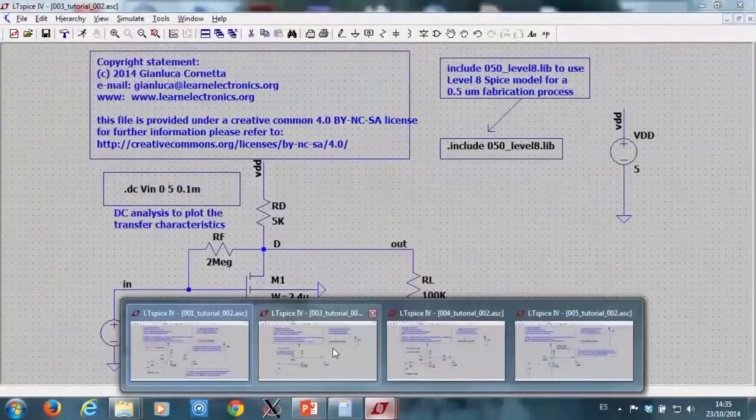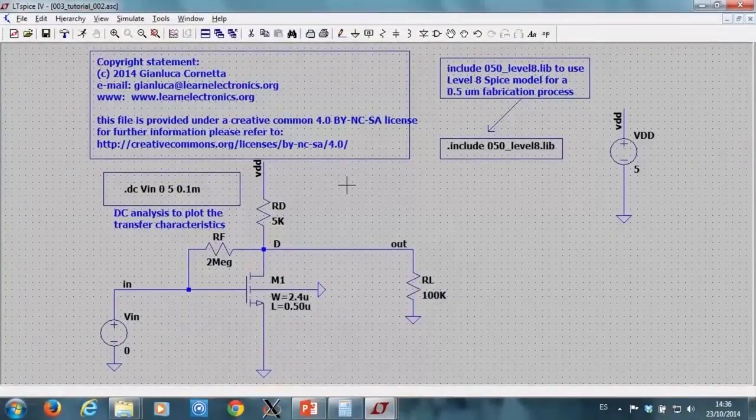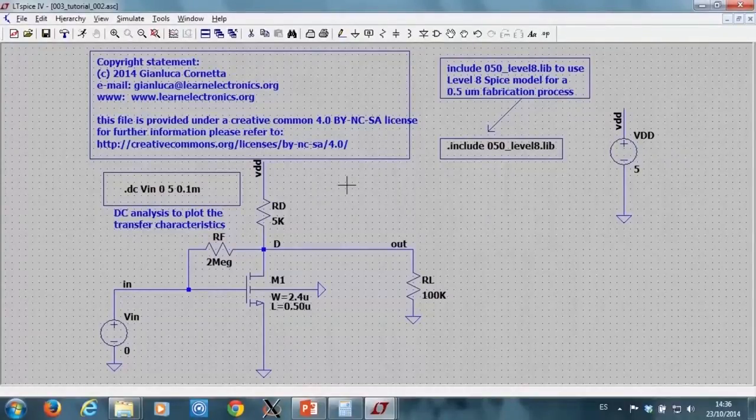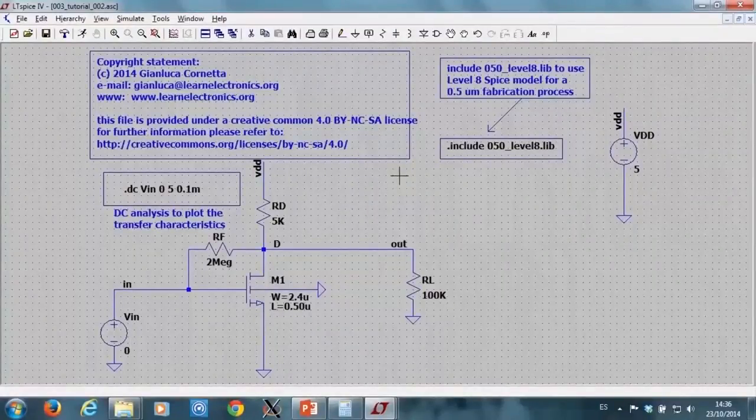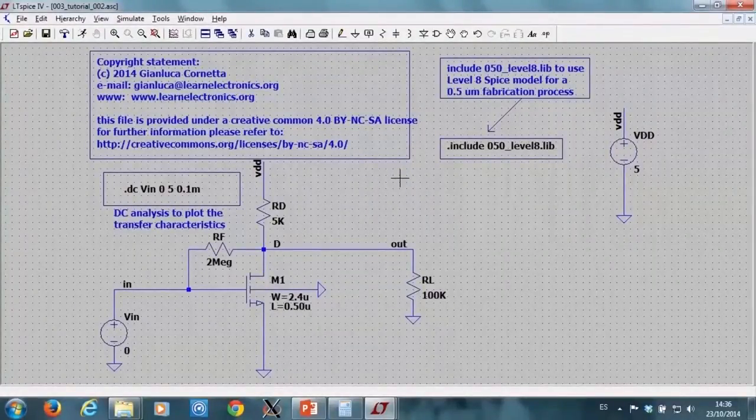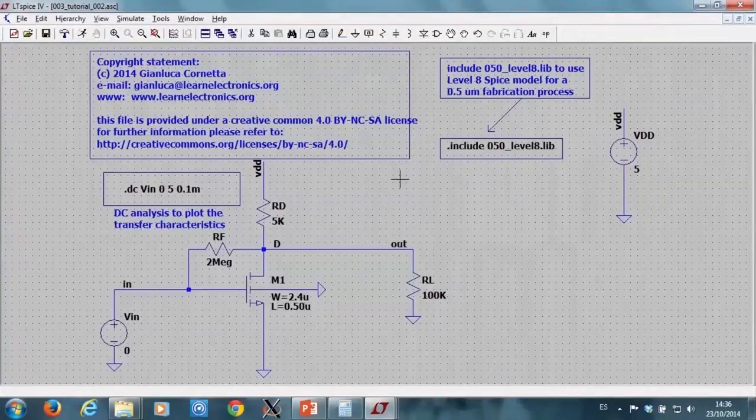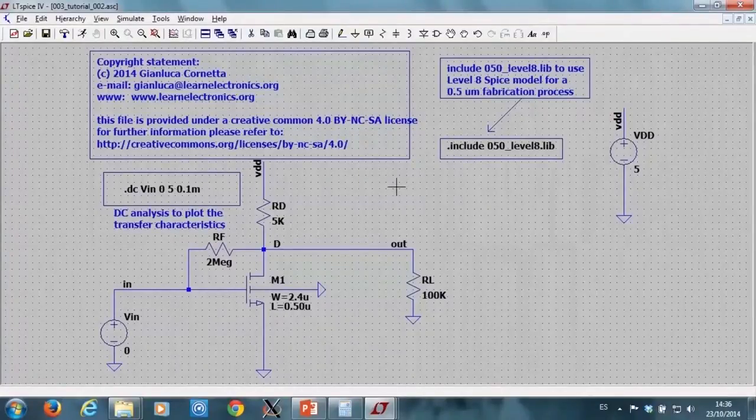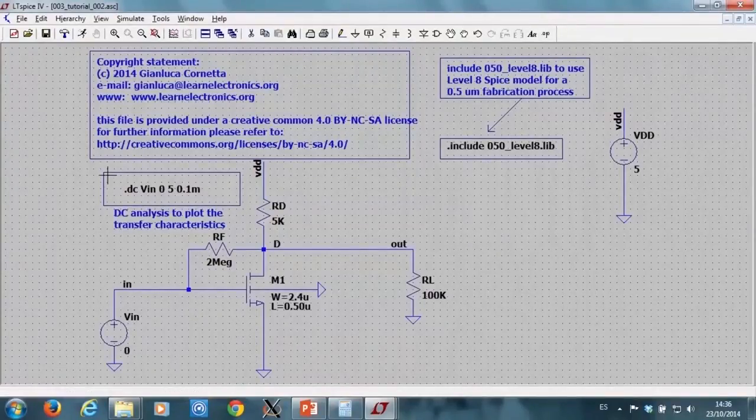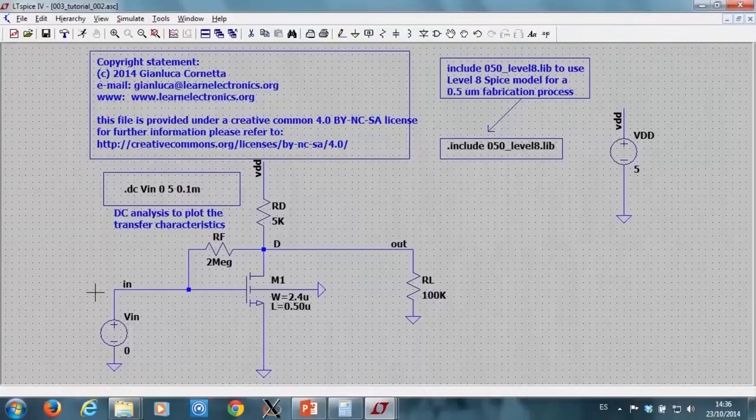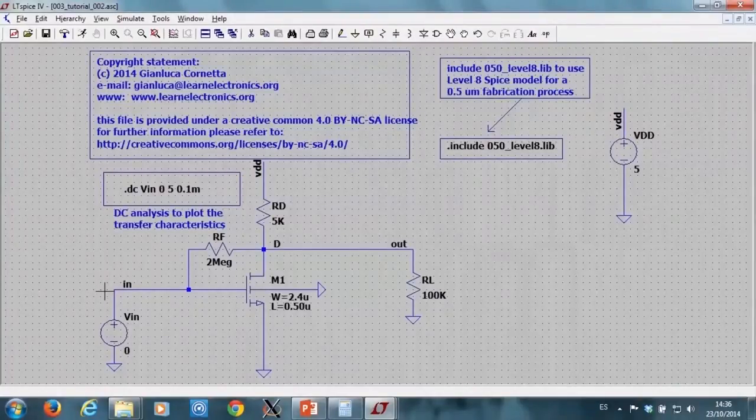What I can do now is check the DC gain of the amplifier. To compute the DC gain of the amplifier, I must first plot the transfer function of my amplifier, that is the function that relates the output voltage to the input voltage. To do this, I have to perform a DC sweep sweeping the input source VIN.